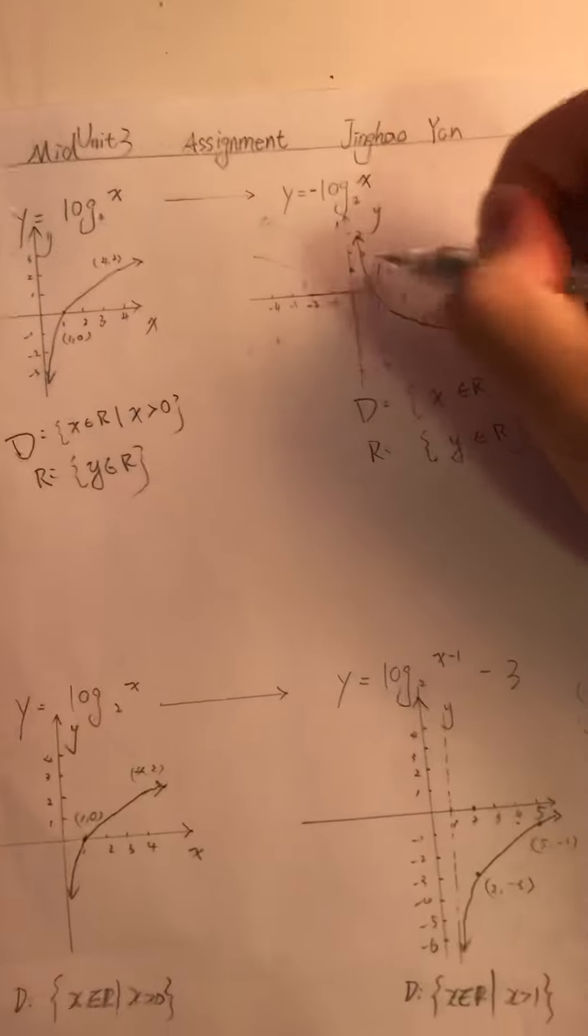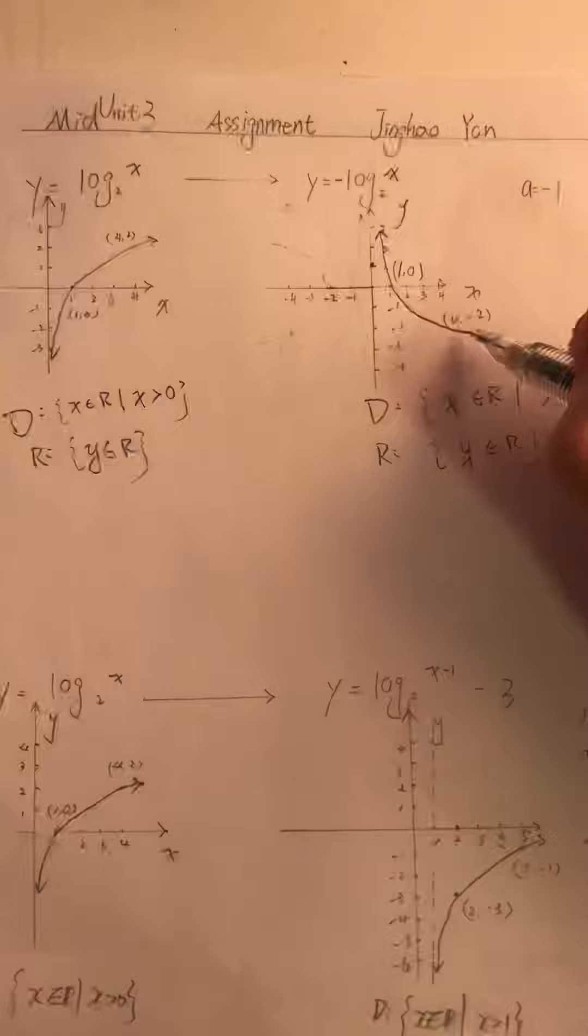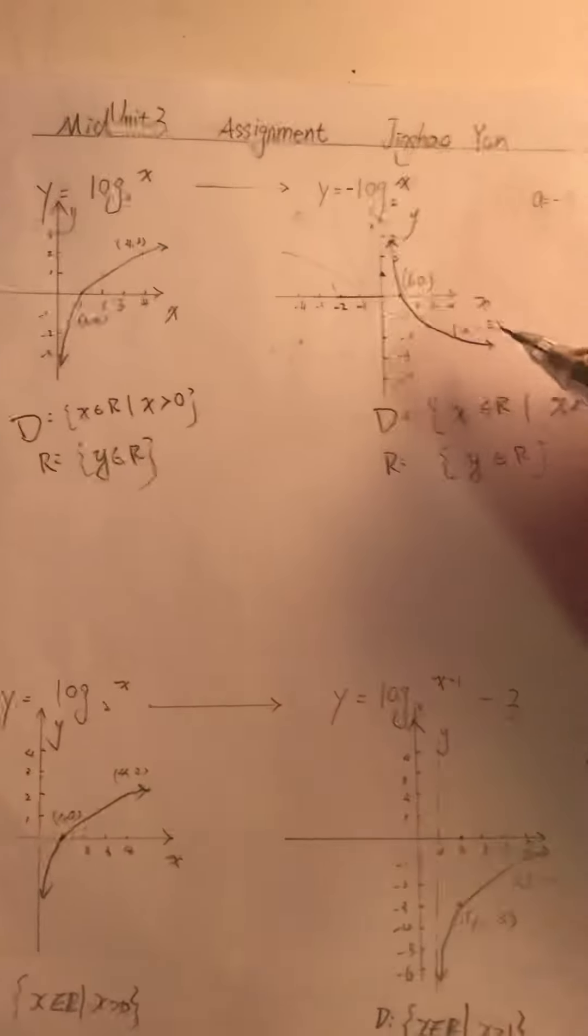(1, 0). And the point (4, 2) turns to the point (4, -2).